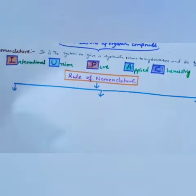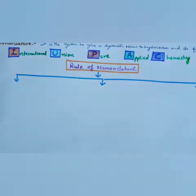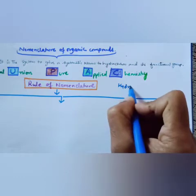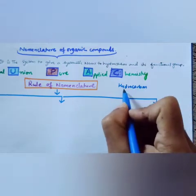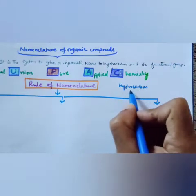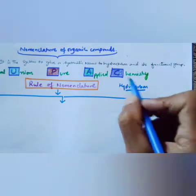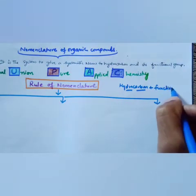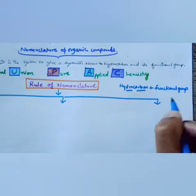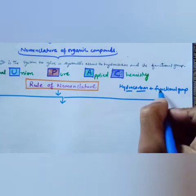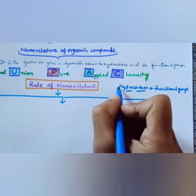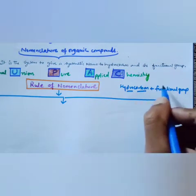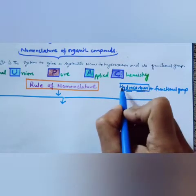In the same way, hydrocarbons are named. The basic criteria to write a name is: hydrocarbon — because it is an organic compound — plus its functional group. The functional group is of two types: prefix and suffix. The prefix functional group name is written in front of the hydrocarbon, and the suffix functional group name is written after the hydrocarbon.